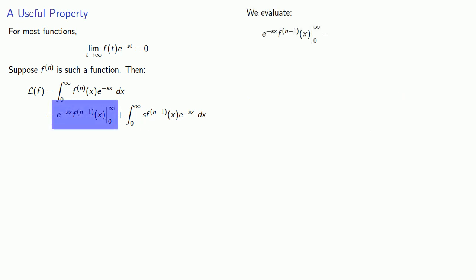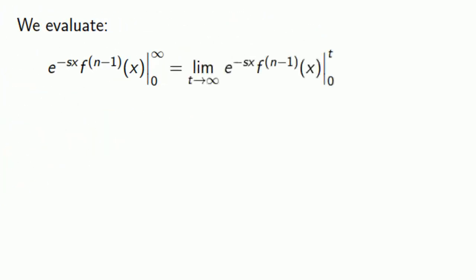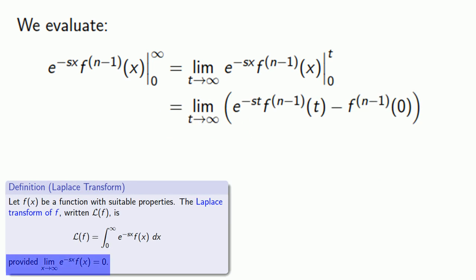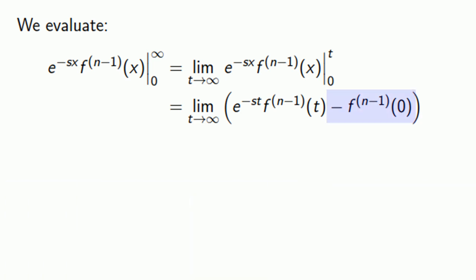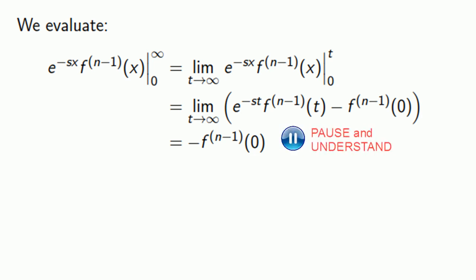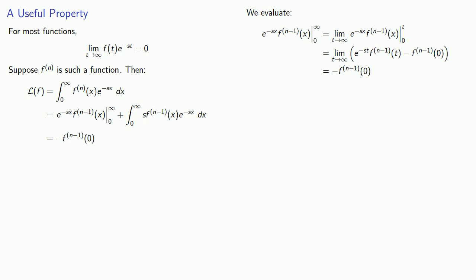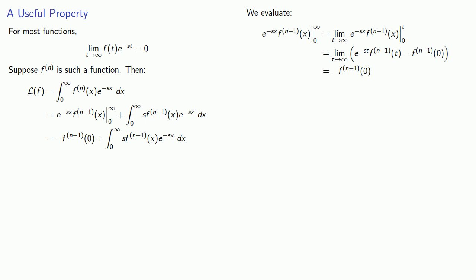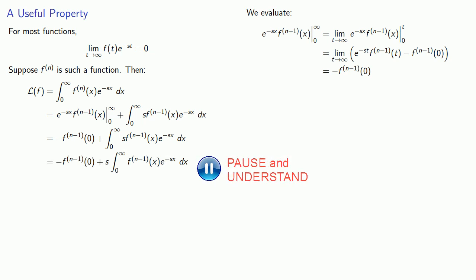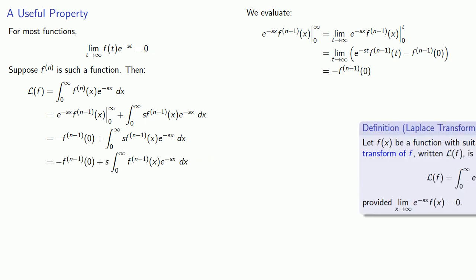Now let's evaluate. The improper integral is evaluated by taking the limit as t goes to infinity. The important assumption is that the integrand goes to zero as t goes to infinity. Meanwhile, the boundary term doesn't depend on t, so it remains, giving us minus the n minus first derivative at zero. Since s is a constant, we can remove that constant factor from the remaining integral. Definitions are the whole of mathematics — all else is commentary. This improper integral is the Laplace transform of f to the n minus one, and so we can rewrite our expression.